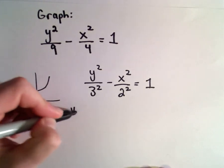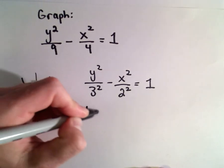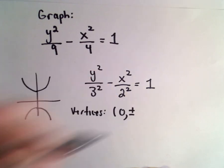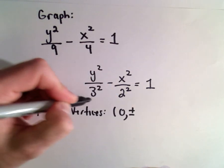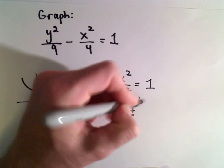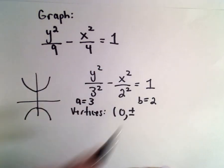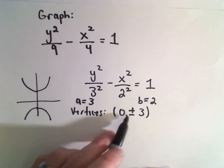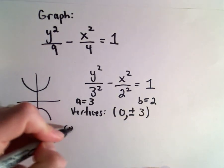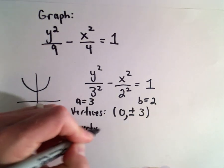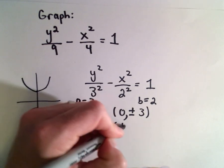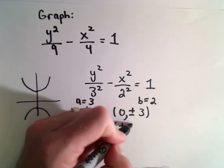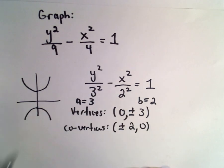Recall that the vertices occur at the point (0, ±a). In this case, our a value is 3. Our b value, which we'll use in a moment, is just 2. So the vertices will occur at (0, ±3). The co-vertices occur at (±b, 0), which is (±2, 0).